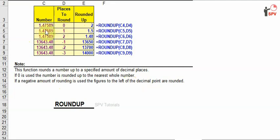Similarly, 1.4 with a 7 after it will increase the value to 1.5. And for 1.47, even though there is a 5, it rounds up to 1.48.